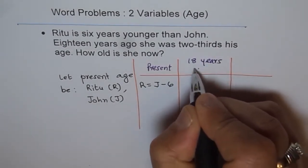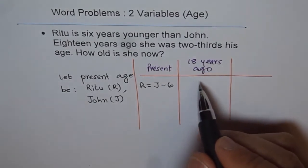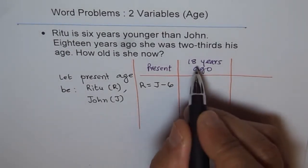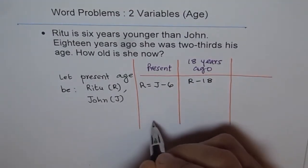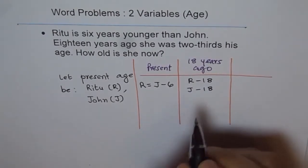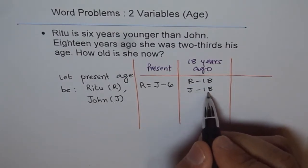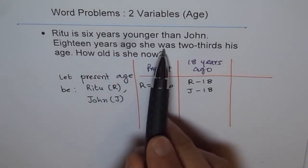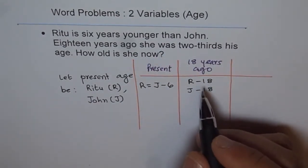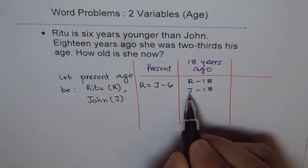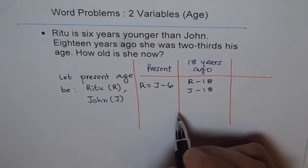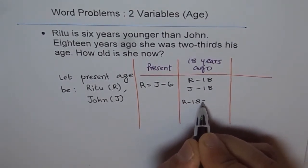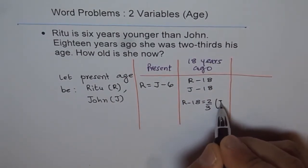Eighteen years ago, the age of Ritu was R − 18 and the age of John was J − 18, since both were younger by 18 years. The condition states she was two-thirds his age, so we write: R − 18 = (2/3)(J − 18). That is the second relation representing the situation 18 years ago.